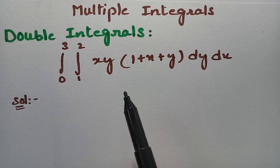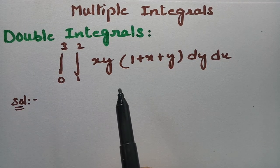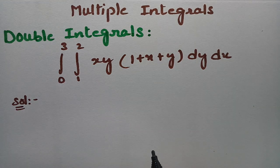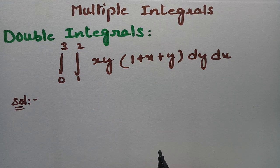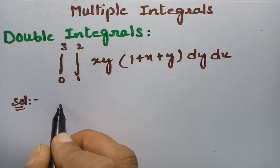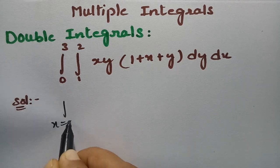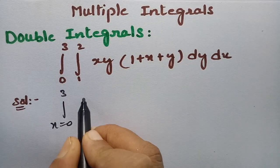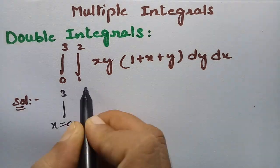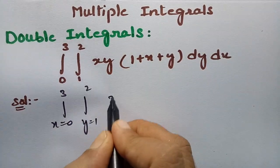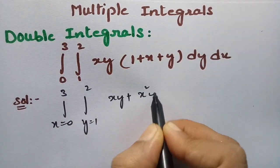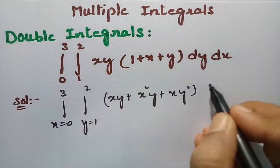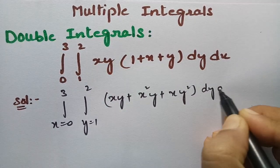So here we have the integral from 0 to 3 and integral from 1 to 2 of x·y·(1 + x + y) dy dx. First of all, I am going to integrate with respect to y. If I multiply this out, this will be xy + x²y + x·y² dy dx.